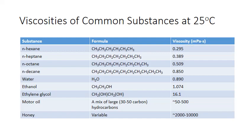At the small end of the viscosity range, we have straight-chain alkanes made up of carbon and hydrogen. These are all nonpolar molecules — there are no high-electronegativity atoms in these chains, and they are dominated by dispersion forces, the weakest of the intermolecular forces. As a result, they flow much more easily and have lower viscosities.